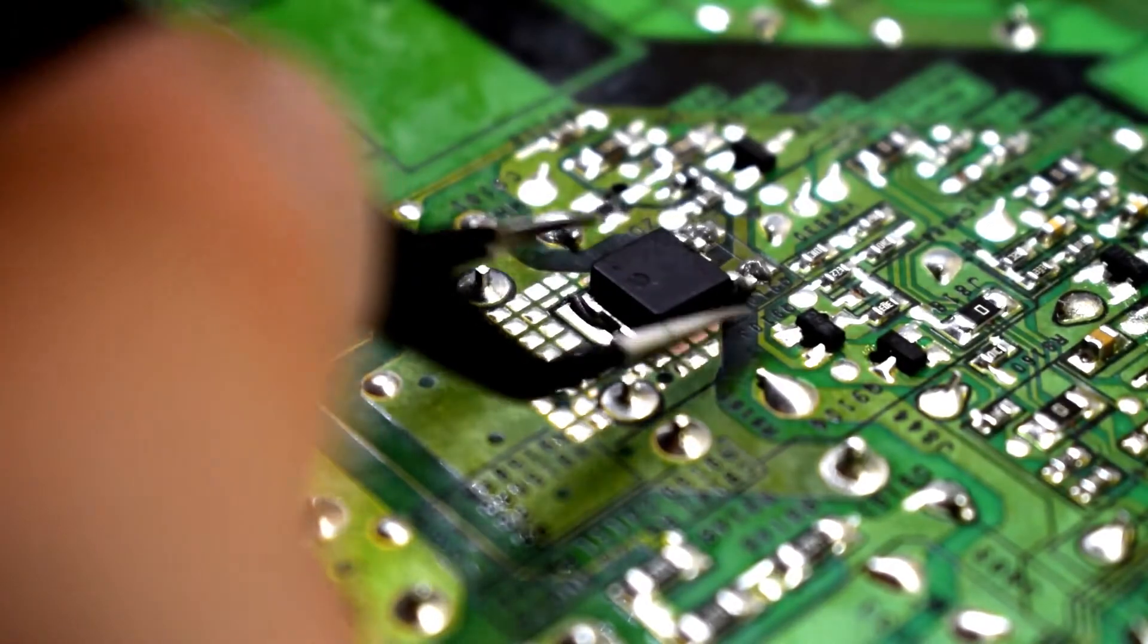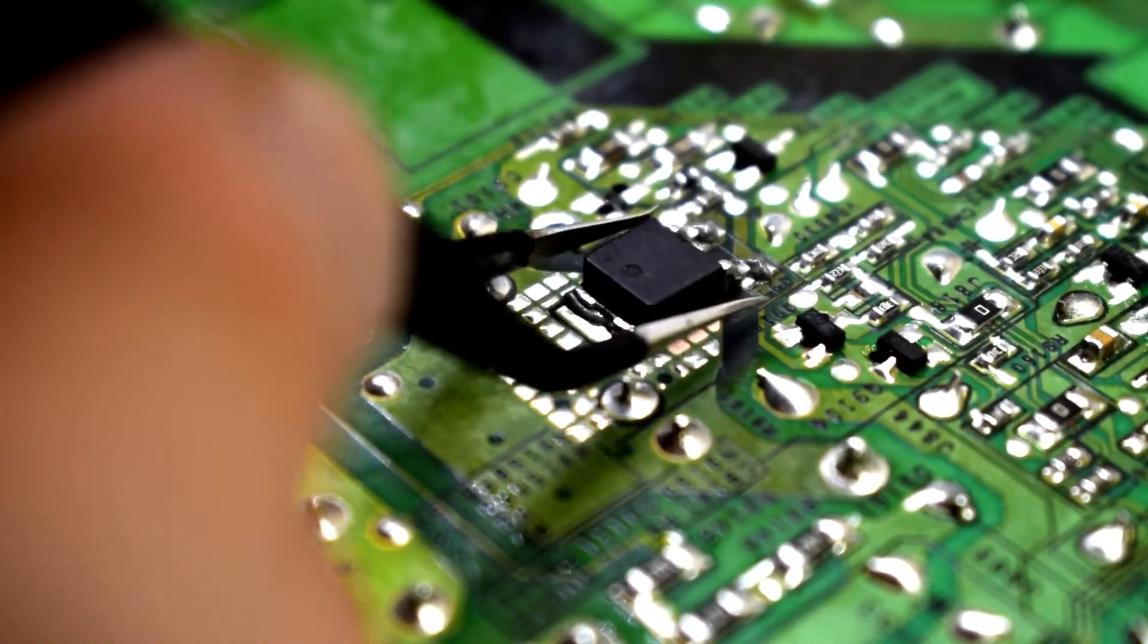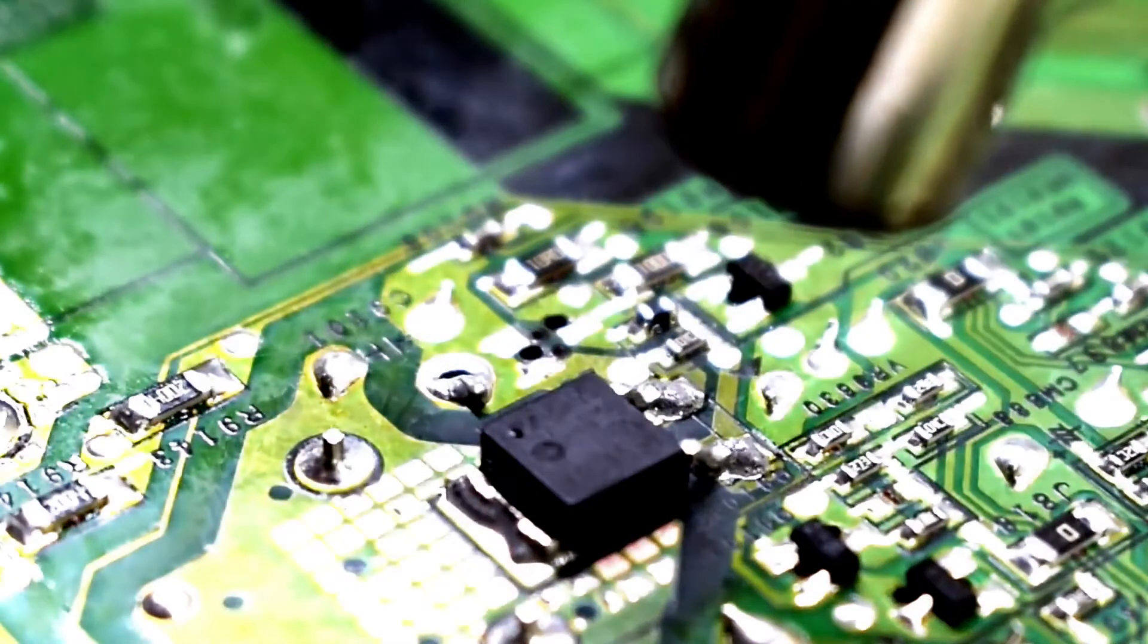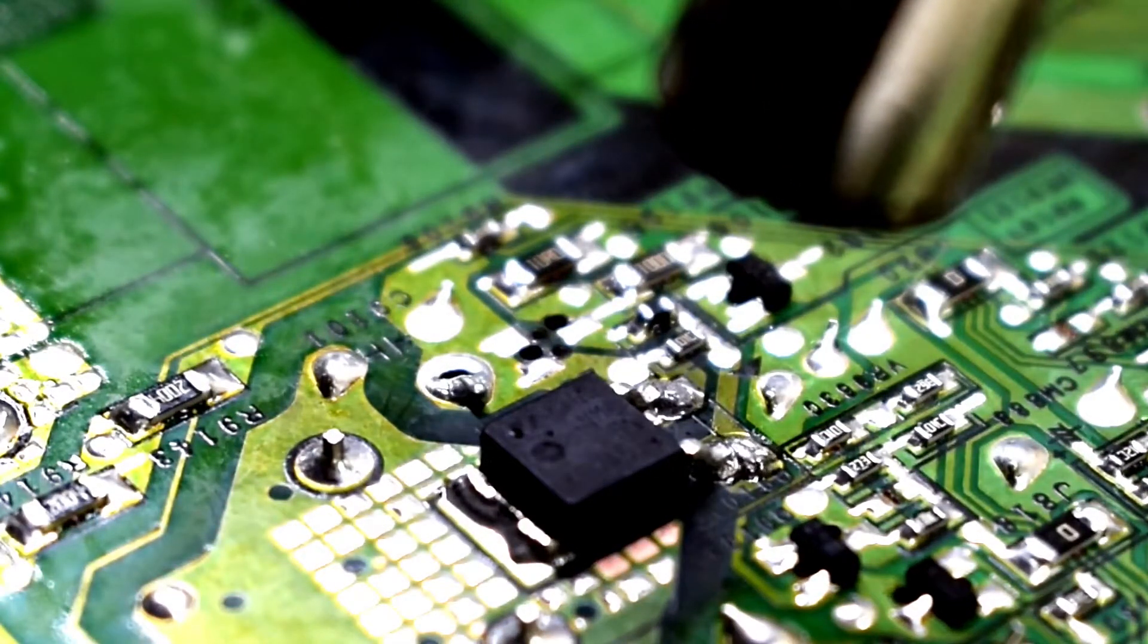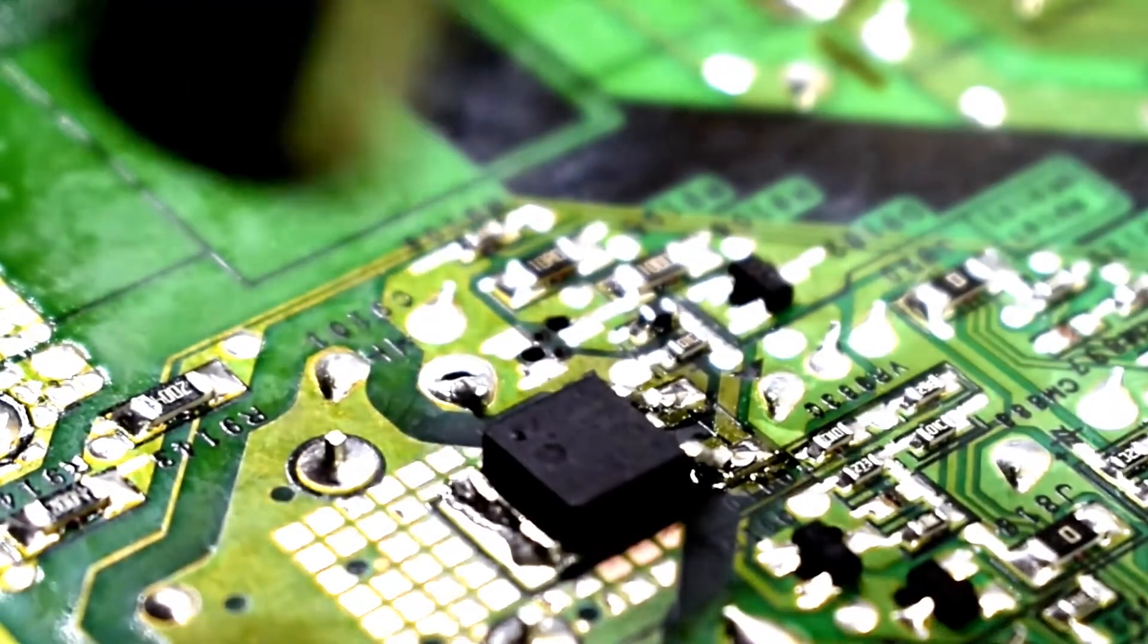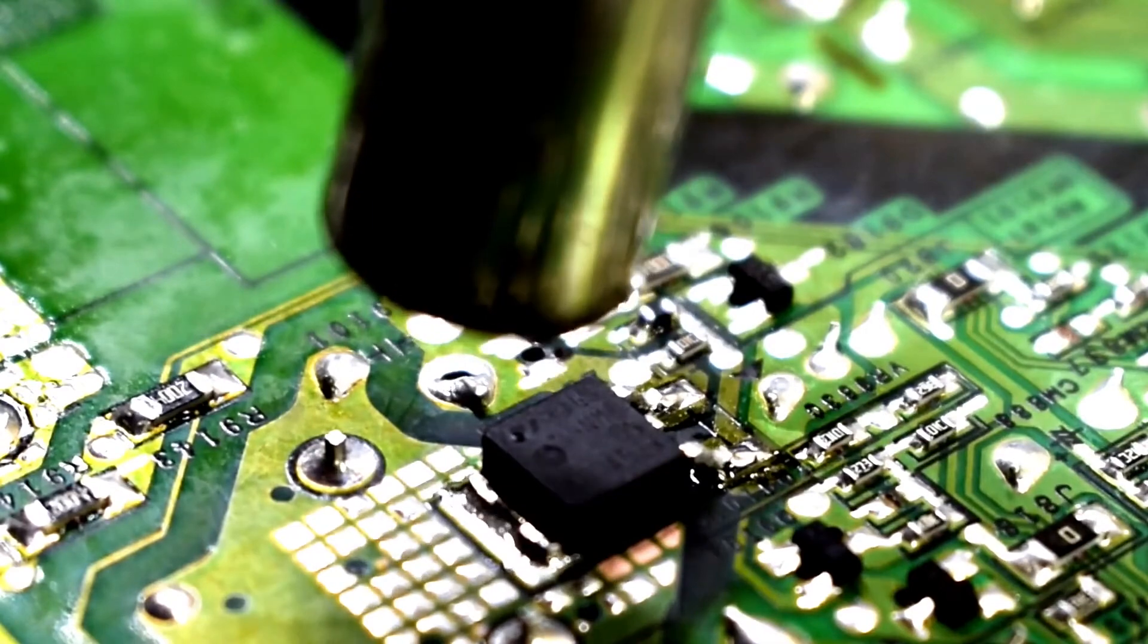Use some tweezers and gently put the new MOSFET in the same place, and I'm just heating it up until the solder melts and it's a good connection. You could use a soldering iron as well, but it's a little bit more difficult.